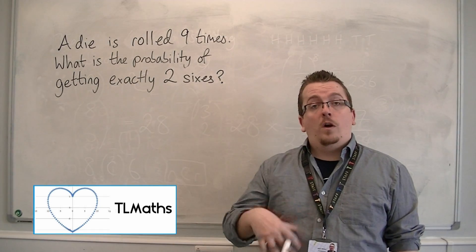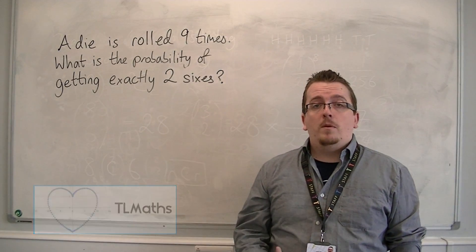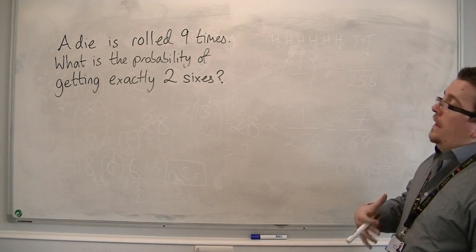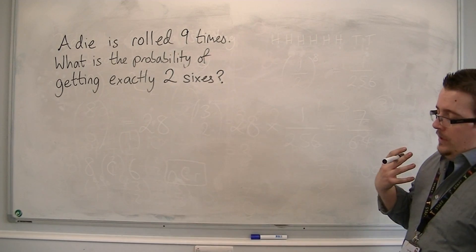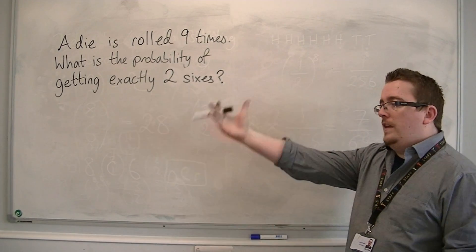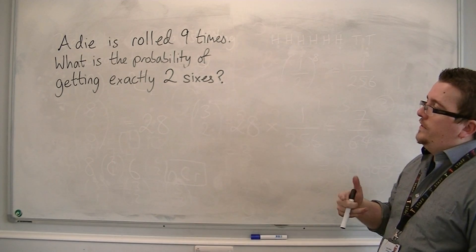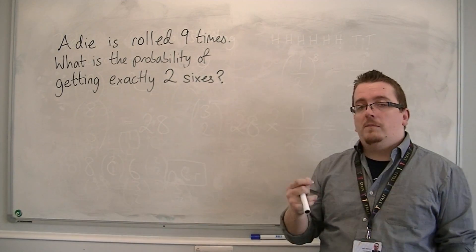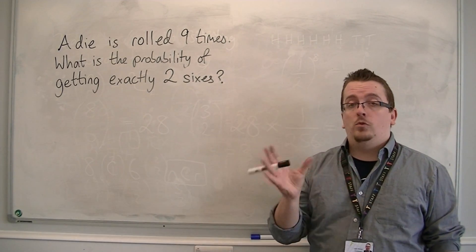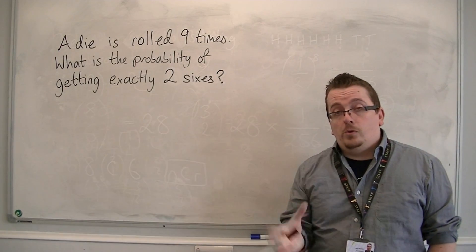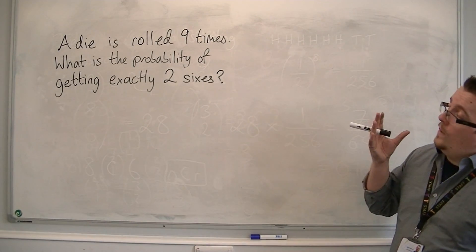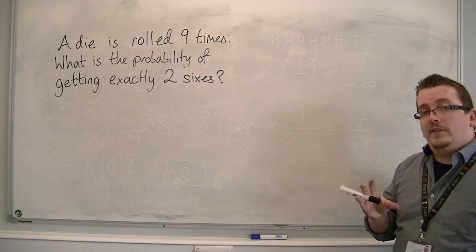In the previous video, I worked through a problem of flipping a coin. What is different to that, to this problem, is that every time I flip the coin, it would be the same probability of either getting heads or tails. You can also work with this when you have unequal probabilities.